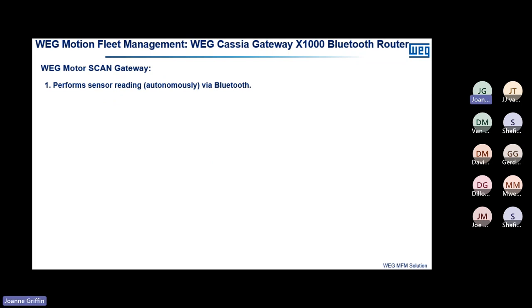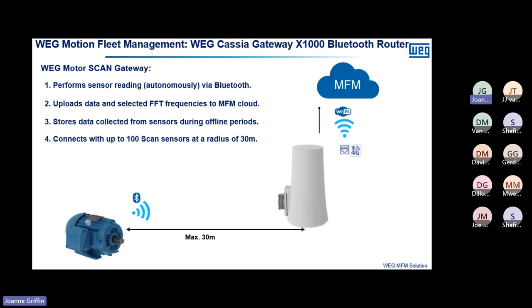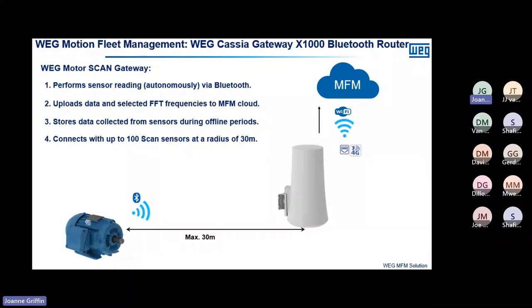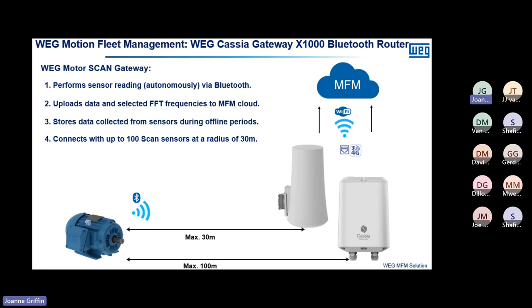Regarding the gateway: it polls sensors autonomously via Bluetooth and uploads selected Fast Fourier Transform frequencies to the MFM cloud — I'll show you some of those FFT frequencies later on. It stores data so that even during offline periods data is not lost. For the MotorScan sensor, the distance between the sensor and gateway should be about 30 metres line of sight, assuming no obstructions in between.